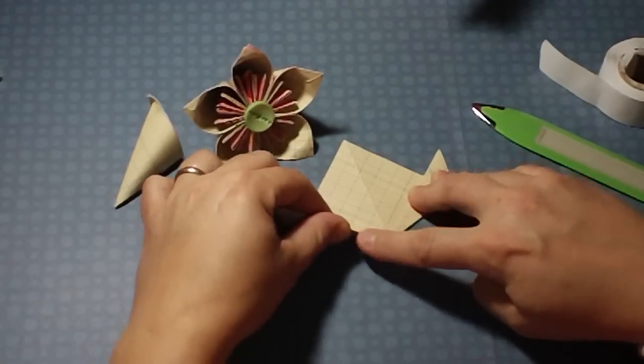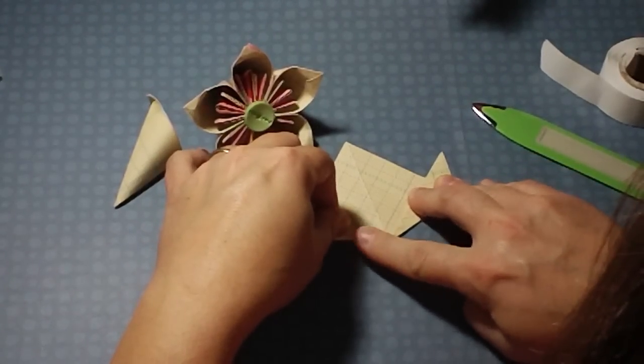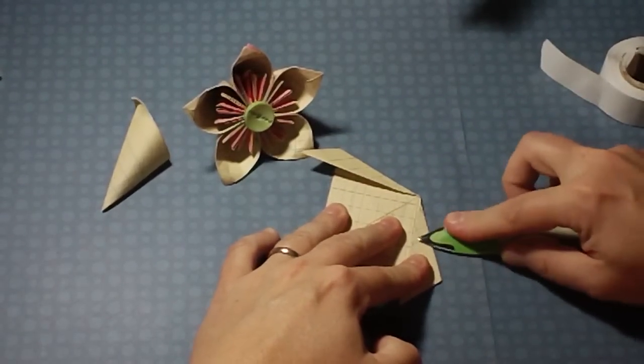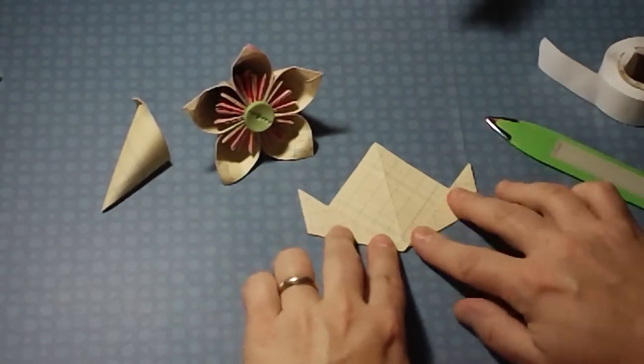Now we're going to take the other corner and fold it up just the same as the other side, right to that midline there. Now we have this piece that looks like this.